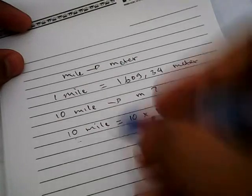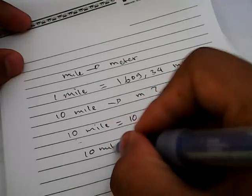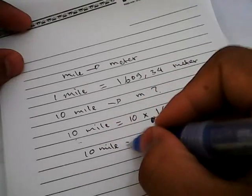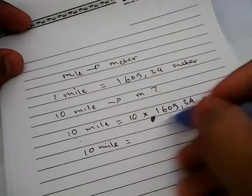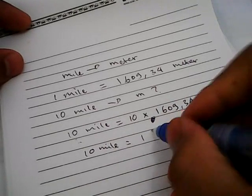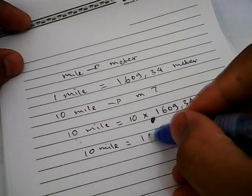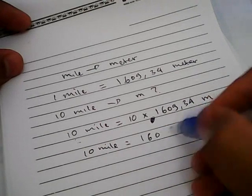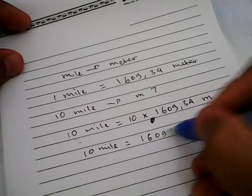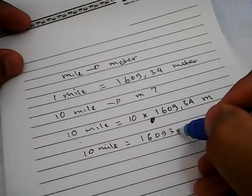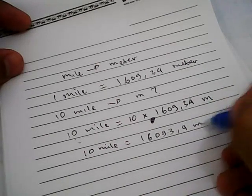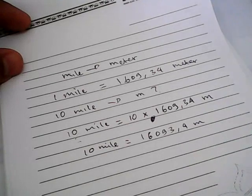Now, 10 miles is equal to 16,093.4 meter. And that's it, that's the result of our conversion problem.